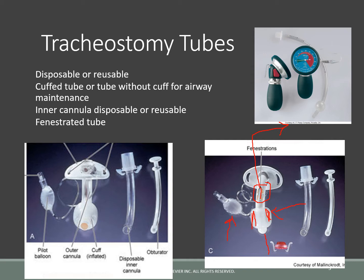This right here is called an inner cannula. It is usually used if somebody has excessive secretions, because they are able to be changed and swapped every four to six hours. Its purpose is to be used for patients who have excessive secretions.